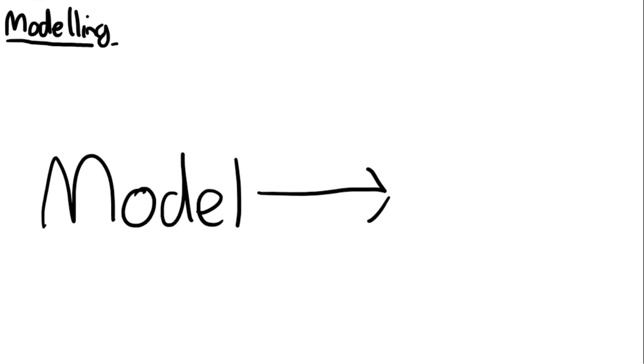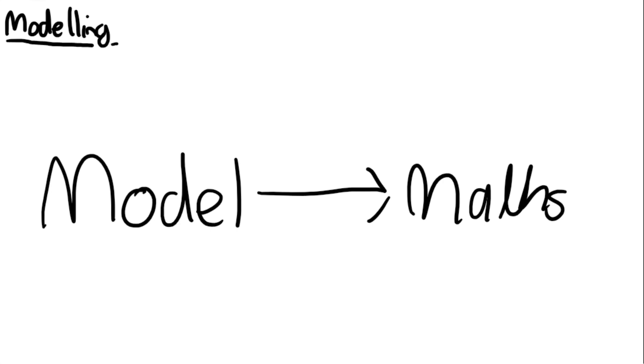A final word on modelling: it comes up a lot in A-level across many different topics. The only skill you need is to convert what the model is describing into an actual maths question — translating the real-life scenario into a straightforward maths problem. The best way to improve is to do as many questions as possible. There aren't too many quadratic modelling questions, but modelling appears throughout future topics, so practice will make it easier.